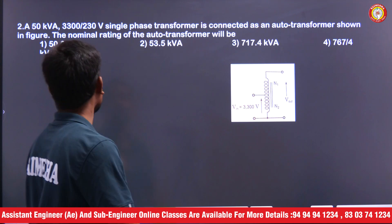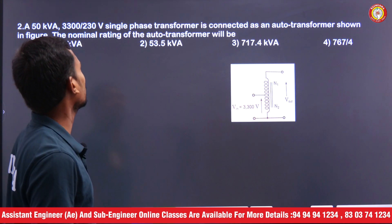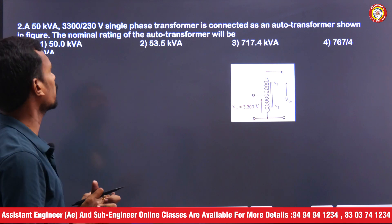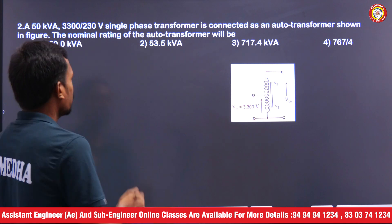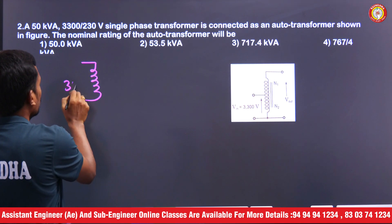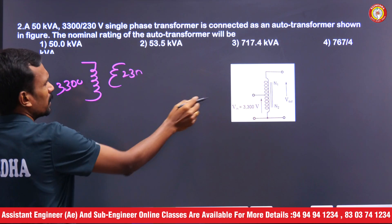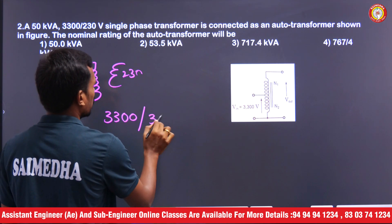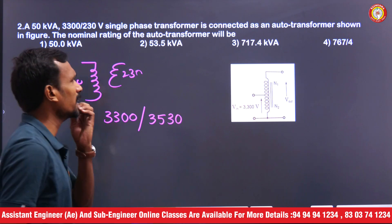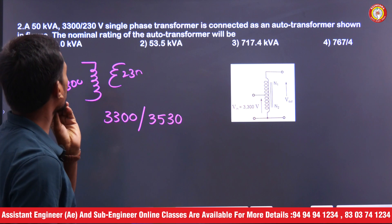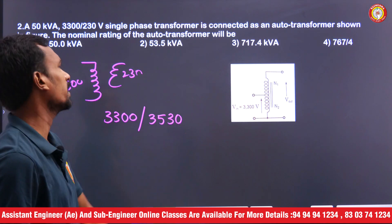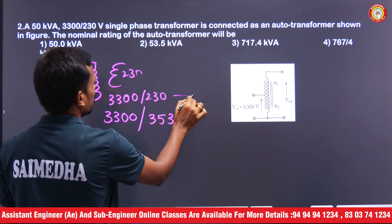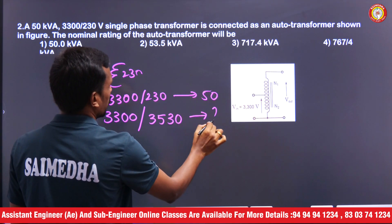Next question: a 50kVA, 3300 by 230 volts single phase transformer is connected as an auto transformer as shown in the figure below. Initially this is 3300 by 230 volts, but now this is connected as 3300 by 3530 volts. What is the new kVA rating? Just by comparison you will get the answer.